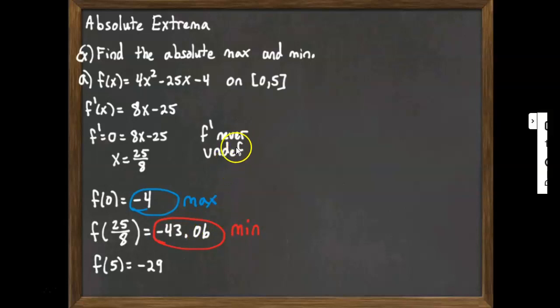It's very important here. These values really depend on this interval. That's going to really dictate what your max and min are. Because if we didn't include the 25 eighths, if our interval was, say, 0 to 3, then we wouldn't have a critical point in there. We'd only be looking at 0 and at 3. One would be the max and one would be the min.